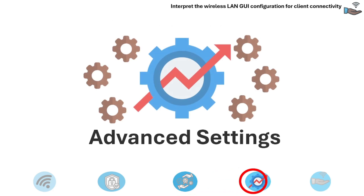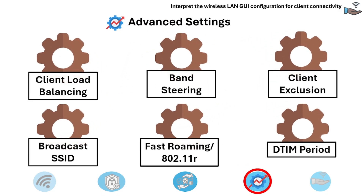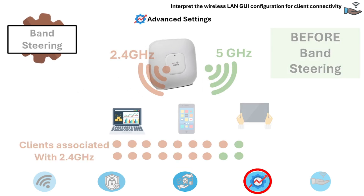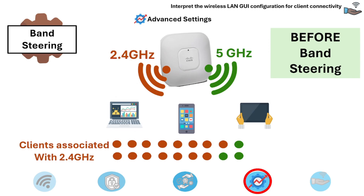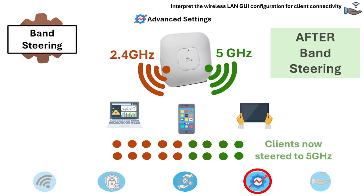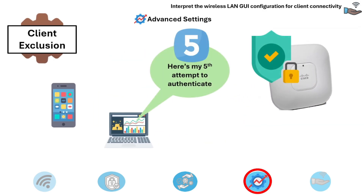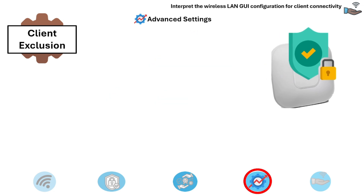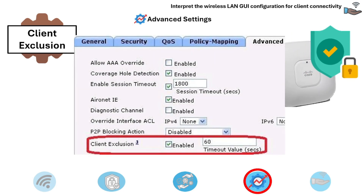Let's move on to advanced settings. Client load balancing distributes wireless clients evenly among multiple access points in a network. Next is band steering, which guides dual-band devices to connect to the optimal frequency band — directing them to the 5 GHz band if supported and beneficial, or allowing connection to the 2.4 GHz band otherwise. Client exclusion is a security feature that temporarily blocks clients after excessive authentication failures. It can be enabled globally or per wireless LAN and relies on correctly configured EAP timeouts and RADIUS server settings.